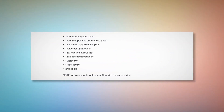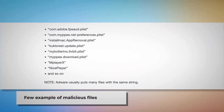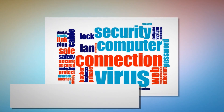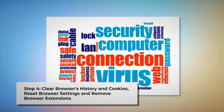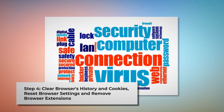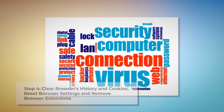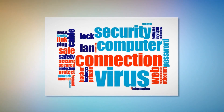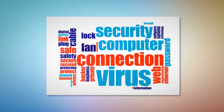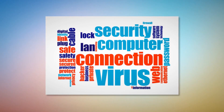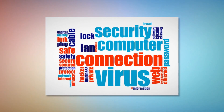A few examples of such malicious files are shown on screen. Note: adware usually places many files with the same string. Step four: clear your browser's history and cookies, reset browser settings, and remove or disable unknown browser extensions. Once you delete the harmful files as mentioned in step three, you should delete malicious or unknown extensions from your browsers — Safari, Chrome, Firefox, Opera, and so on, whichever you are or were using.